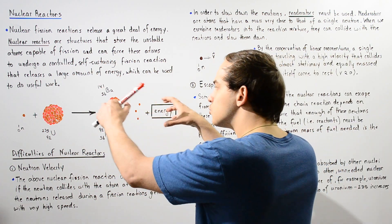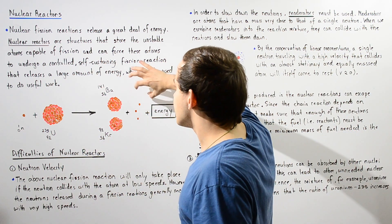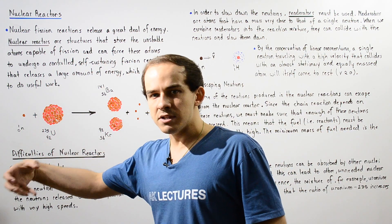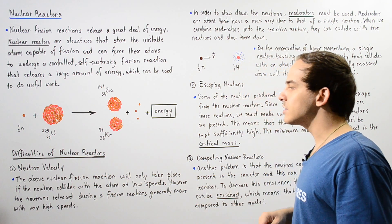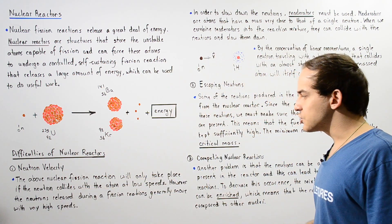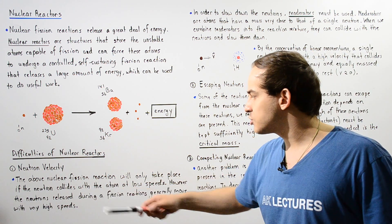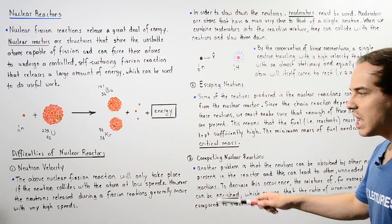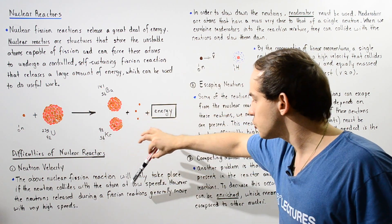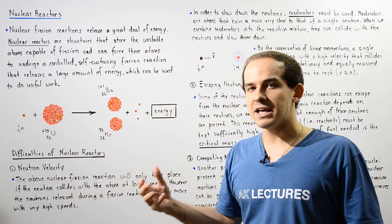Unless we control and fix this problem, these neutrons with very high velocities will not be able to continue the chain reaction. To summarize: the nuclear fission reaction will only take place if the neutron collides with the atom at low speeds, but the neutrons released during a fission reaction generally move with very high velocities.